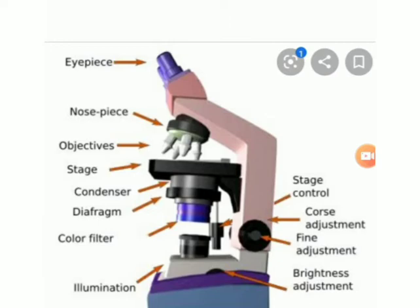Then, using the coarse adjustment knob, focus the tissue under the objective lens at 4x magnification. Next, with the fine adjustment knob, we can do fine focusing.